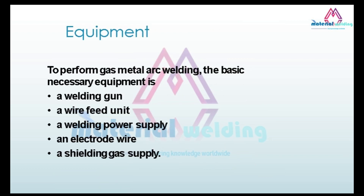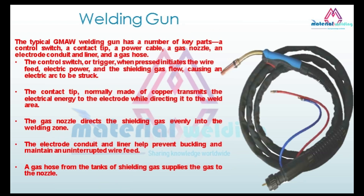The typical GMAW welding gun has several key parts: a control switch, a contact tip, a power cable, a gas nozzle, an electrode conduit and liner, and a gas hose. The control switch (trigger), when pressed, initiates the wire feed, electric power, and shielding gas flow, causing an electric arc to be struck. The contact tip, normally made of copper, transmits electrical energy to the electrode while directing it to the weld area. The gas nozzle directs the shielding gas evenly into the welding zone. The electrode conduit and liner help prevent buckling and maintain uninterrupted wire feed. A gas hose from the shielding gas tank supplies gas to the nozzle.